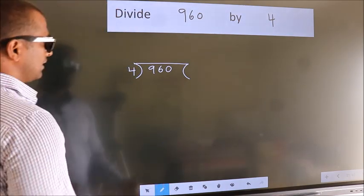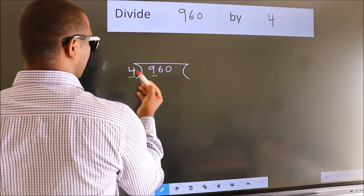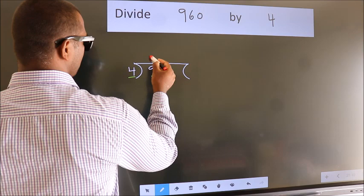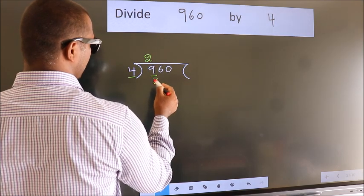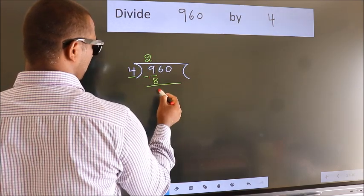Next. Here we have 9. Here 4. A number close to 9 in 4 table is 4 twos 8. Now, we should subtract. We get 1.